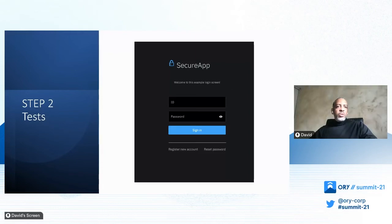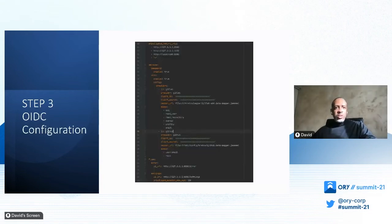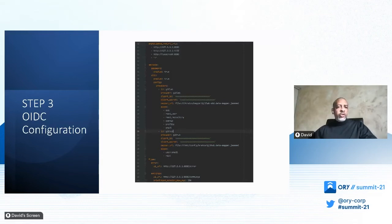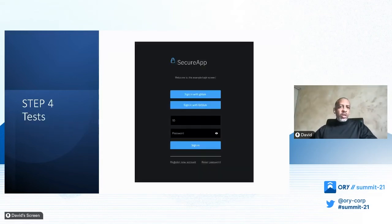For now, only the username-password authentication method is configured. Once we validate the full configuration and all flows, we can go further by configuring our OIDC providers. To do so, we need to create an application into each provider. Once that is done, we have all we need to proceed and conduct all the tests on all flows with the provider method.